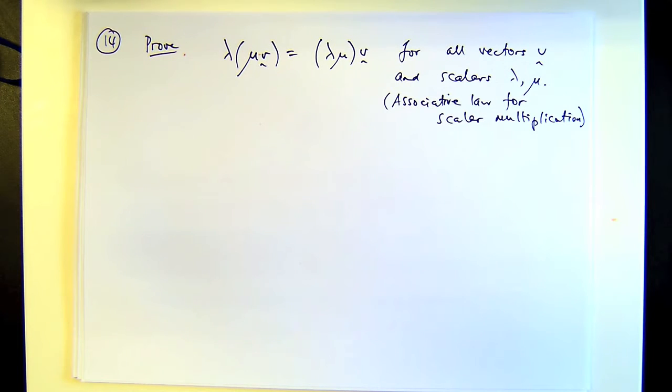Here we've got a result called the associative law for scalar multiplication, and we're asked to prove it.